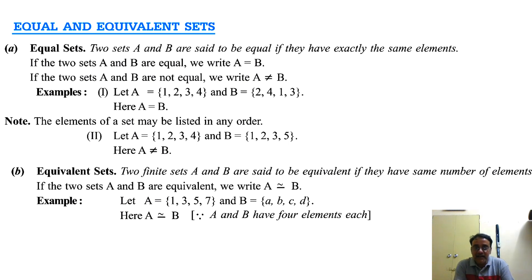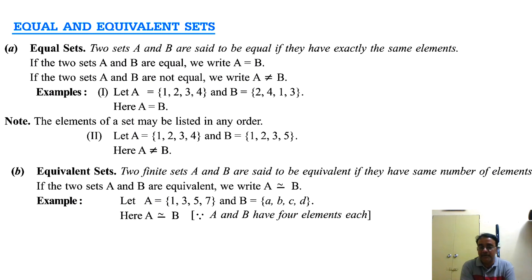In a second example, A = {1, 2, 3, 4} and B = {1, 2, 3, 5}. Here, 4 is in A but not in B, and 5 is in B but not in A. So both sets are not equal — A ≠ B.